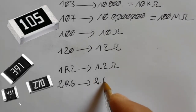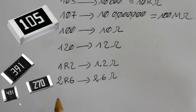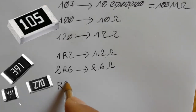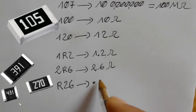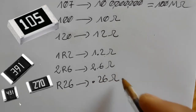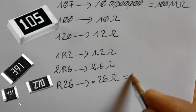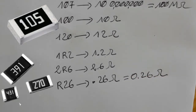Another example: 2R6 means 2.6 ohms. When R appears at the beginning, such as R26, it means 0.26 ohms.